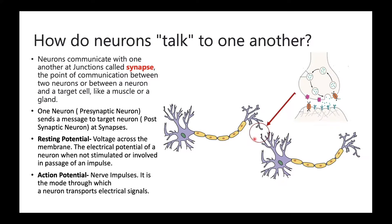How do neurons talk to one another? Neurons communicate with one another at junctions called synapses. The point of communication between two neurons, or a neuron and a target cell like a muscle or gland cell, occurs at synapses. A pre-synaptic neuron sends a message to the post-synaptic neuron at synapses. We will explain synaptic transmission in detail.